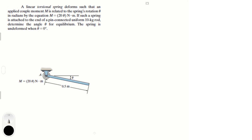Let's do this problem. A linear torsional spring deforms such that an applied couple moment M is related to the spring rotation in radians by the equation M = 20θ newton-meters. If such a spring is attached to the end of a pin-connected uniform 10-kilogram rod, determine the angle theta for equilibrium. The spring is undeformed when theta equals zero degrees. This problem is kind of easy — it just uses a formula not commonly in the book, so that's why it might throw you off.